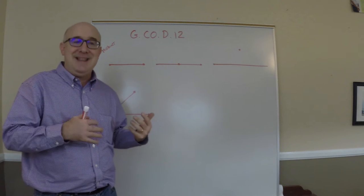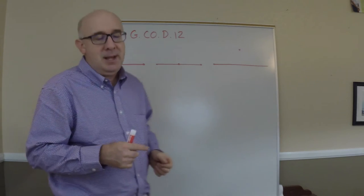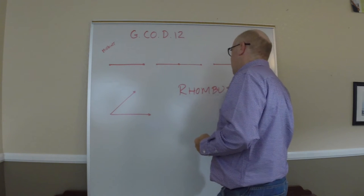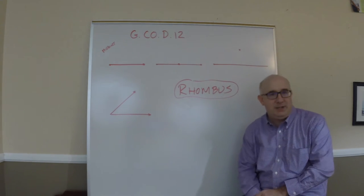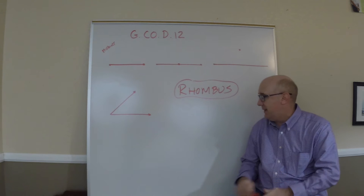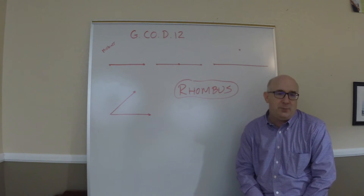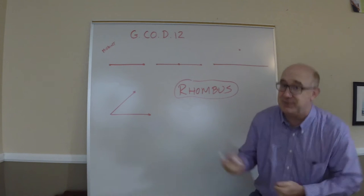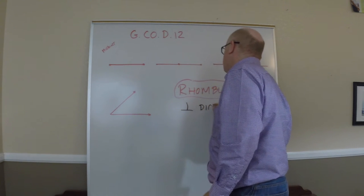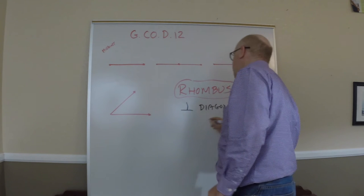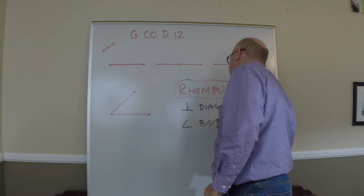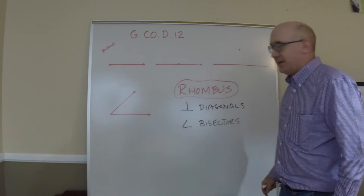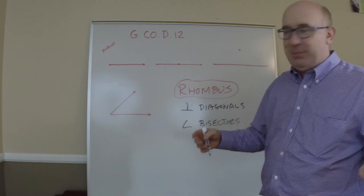All of these things deal with the properties of a rhombus. This little guy is a real important point to constructions. It has all the parallelogram properties and it also has two properties about its diagonals: the diagonals are perpendicular and the diagonals are angle bisectors. These two things actually play a very important role in the behind-the-scenes of how these constructions work.